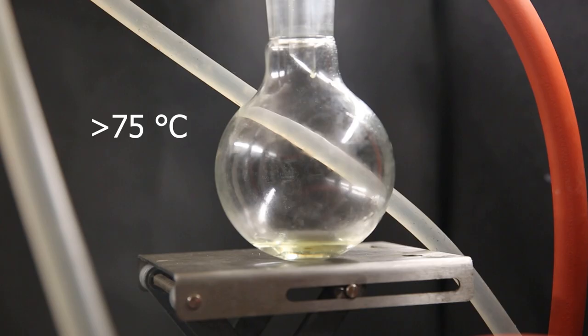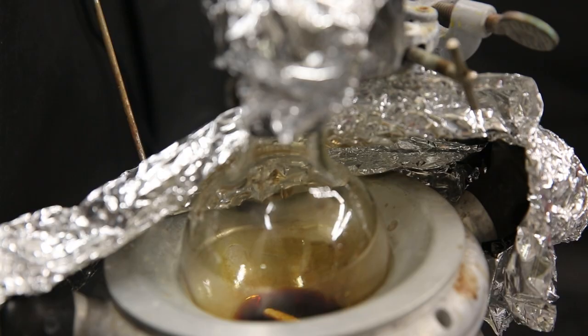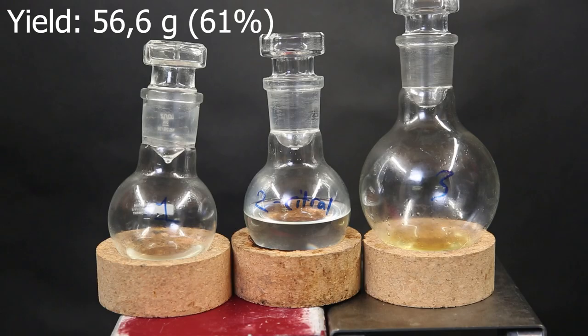When nothing more came over, all that was left in the flask was some red oil. And in the end, I am left with 3 fractions, of which fraction 2 should contain mostly citral. The weight of the second fraction was 56.6g, which is a yield of about 61%. Now the next step is chemical modification.